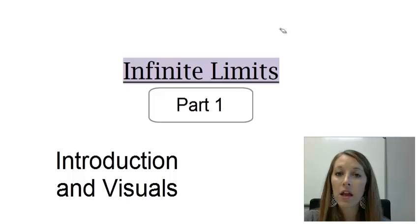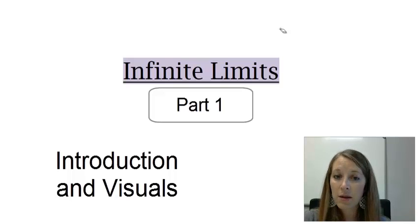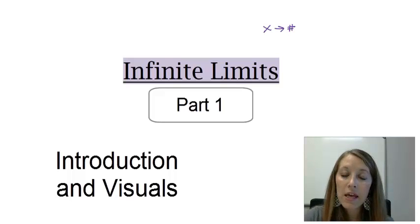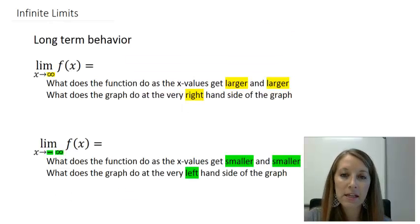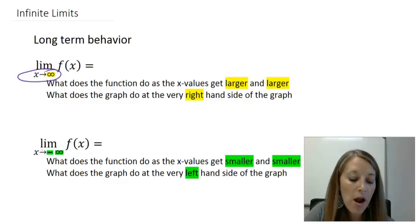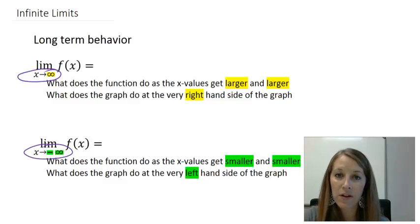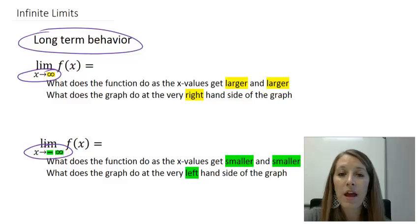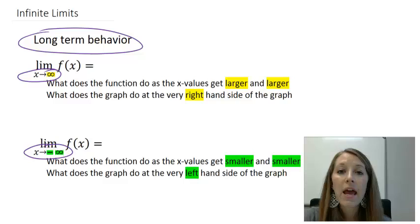This section is focusing on infinite limits. In the last section, we focused on finite limits — as X was approaching a specific number. Here, we're going to look at infinite limits, meaning as X is approaching either positive infinity or negative infinity. This is going to help us determine the long-term behavior of a function, which is really going to help us with applied examples and the long-term behavior of a graph.